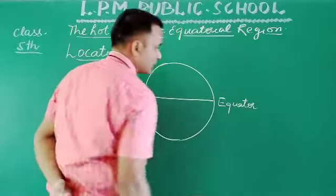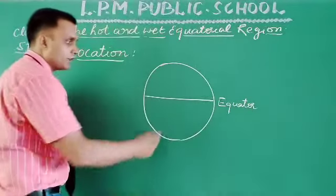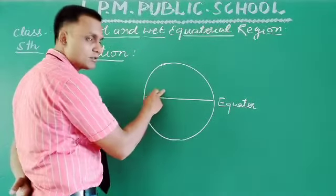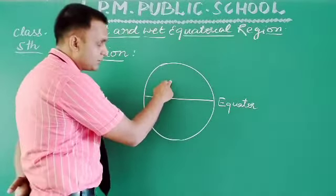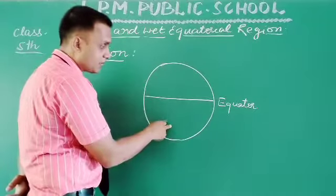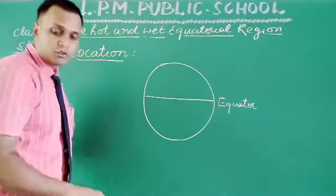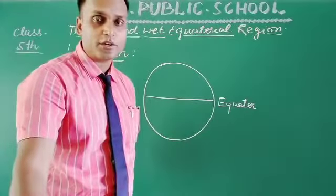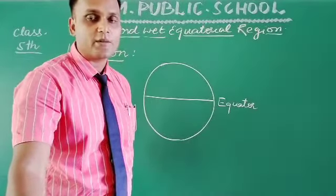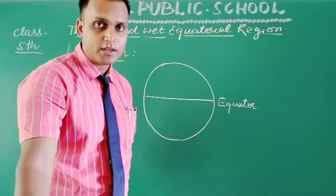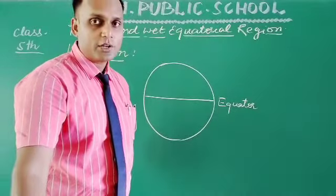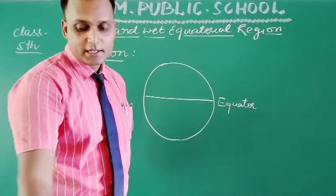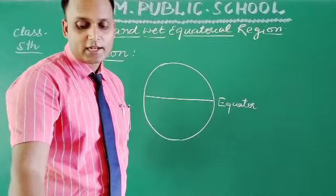Suppose we have this line of the equator. This is the line of the equator which divides the earth into two equal parts — the northern hemisphere and the southern hemisphere.